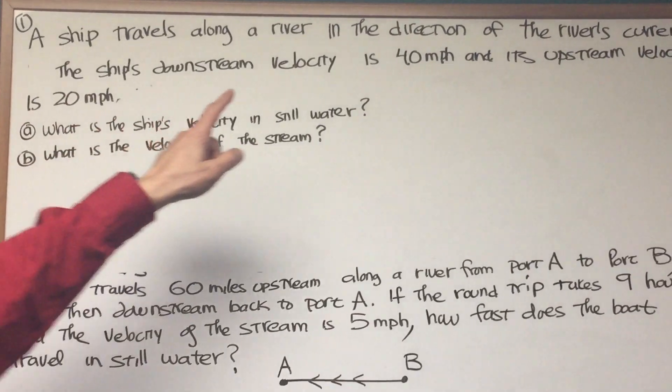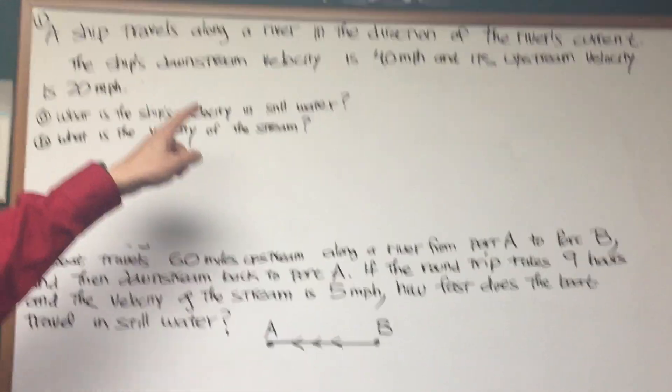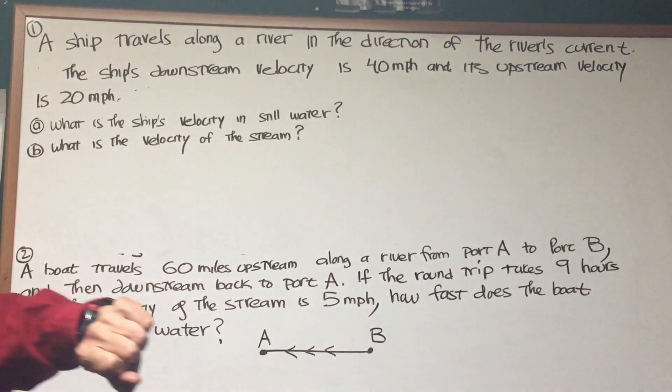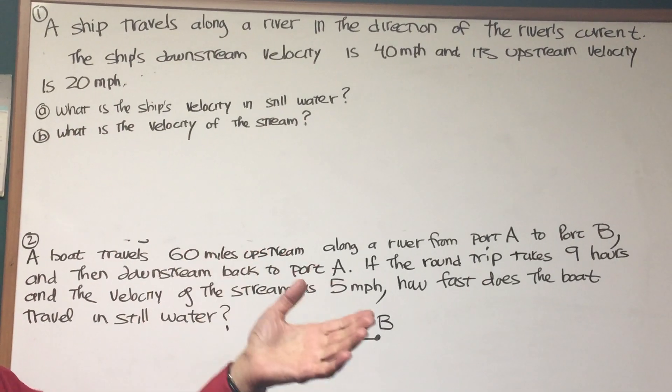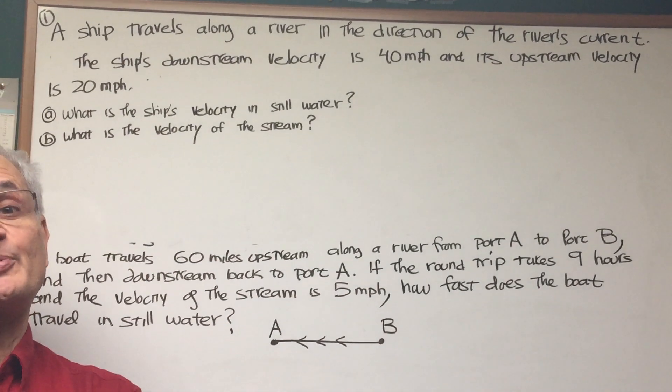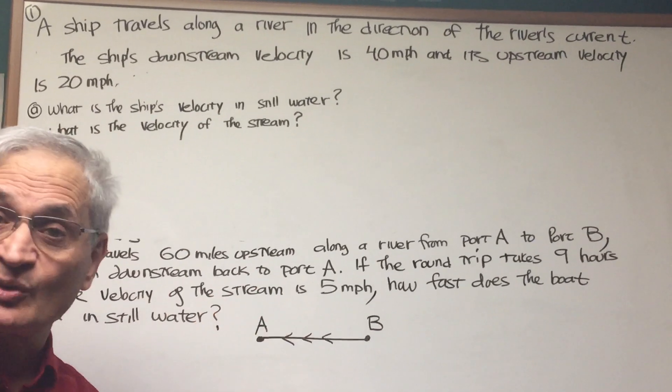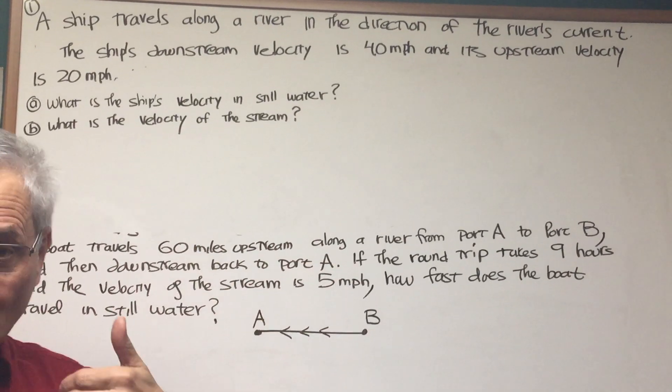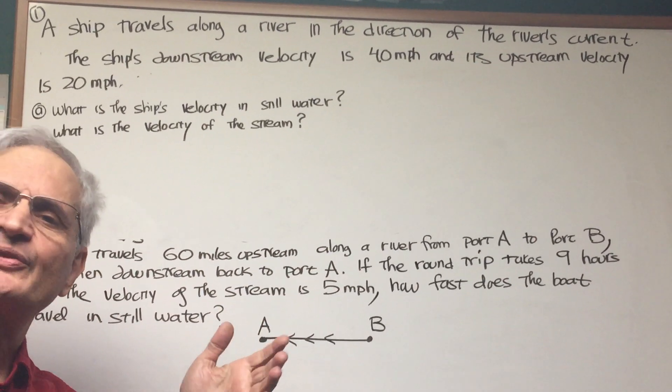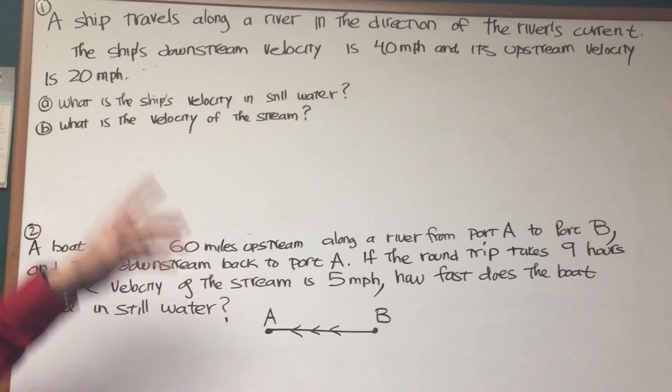A ship travels along a river in the direction of the river's current. The ship's downstream velocity is 40 miles an hour. Its upstream velocity is 20 miles an hour. Now, the reason for the difference in these velocities is that when the ship is traveling downstream, its velocity is its velocity in still water plus the velocity of the stream. When it's traveling upstream against the current of the water, its velocity is its velocity in still water minus the velocity of the stream.